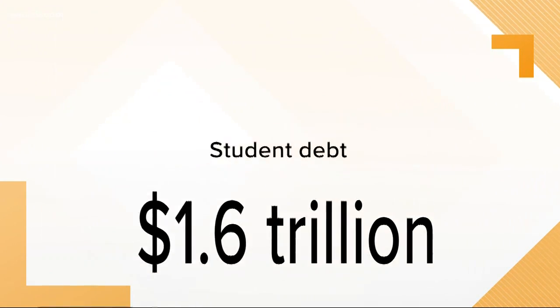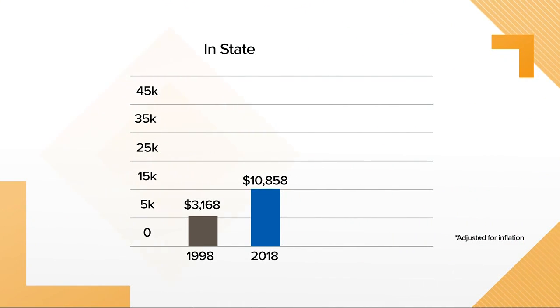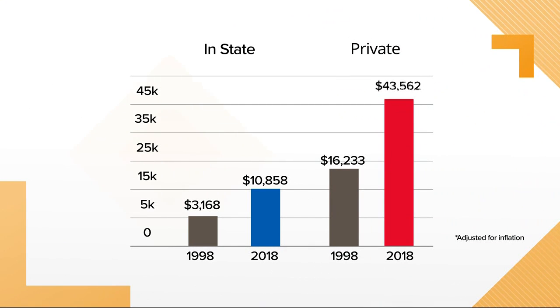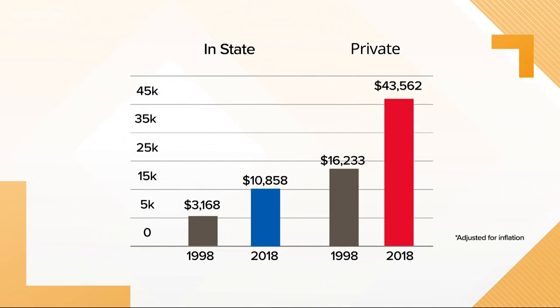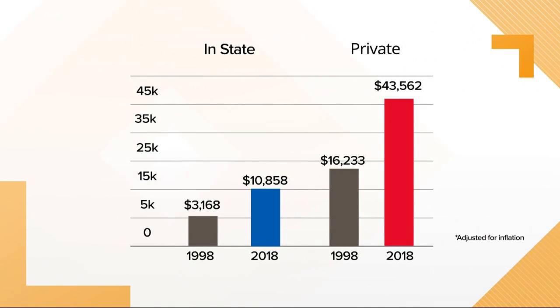Consider this: in 1998, the average in-state college cost around $3,000. Now the average cost is $10,000. Private schools in 1998 cost around $16,000, and 20 years later it's more like $43,000.